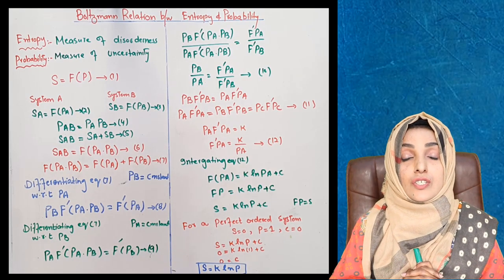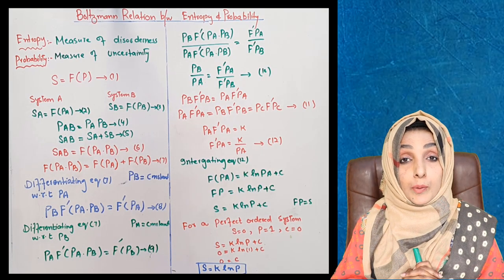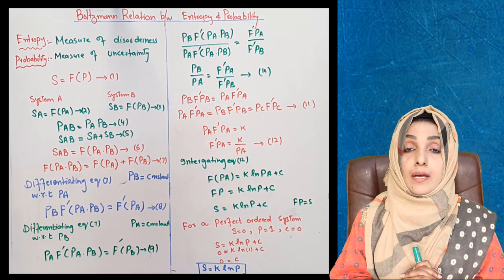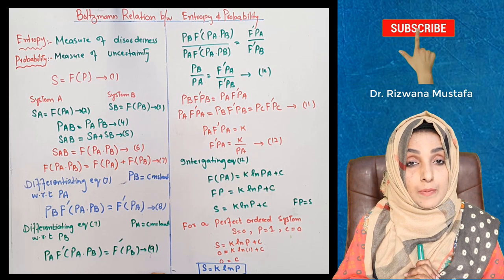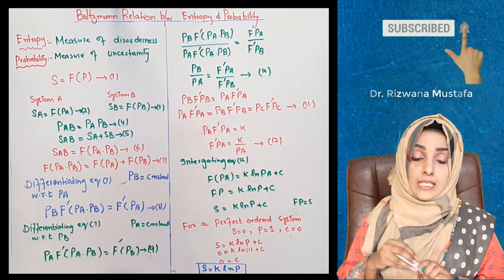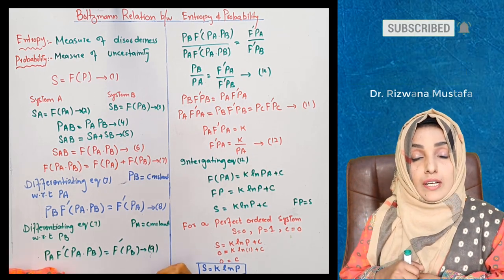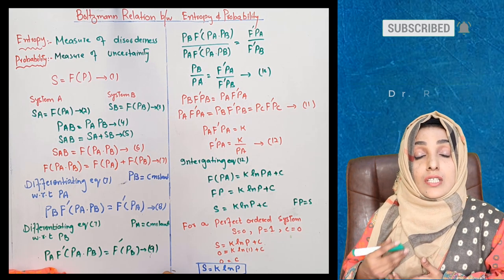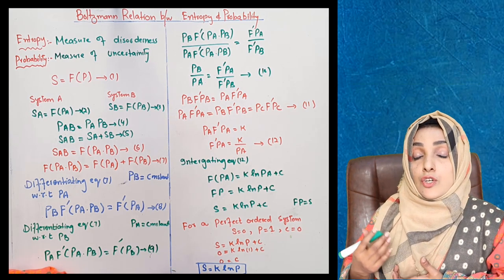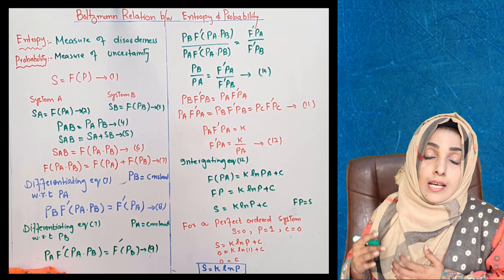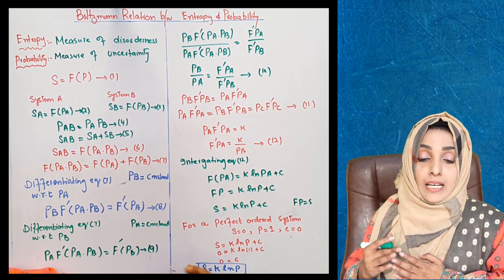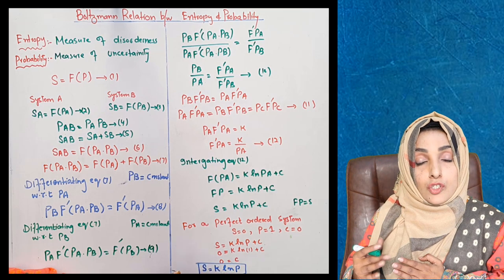The mathematical relationship between the entropy and the probability was drawn by Boltzmann. As we are familiar with the terms of entropy and probability, entropy is the measure of disorderness. So we can say entropy and disorderness are directly proportional to each other.